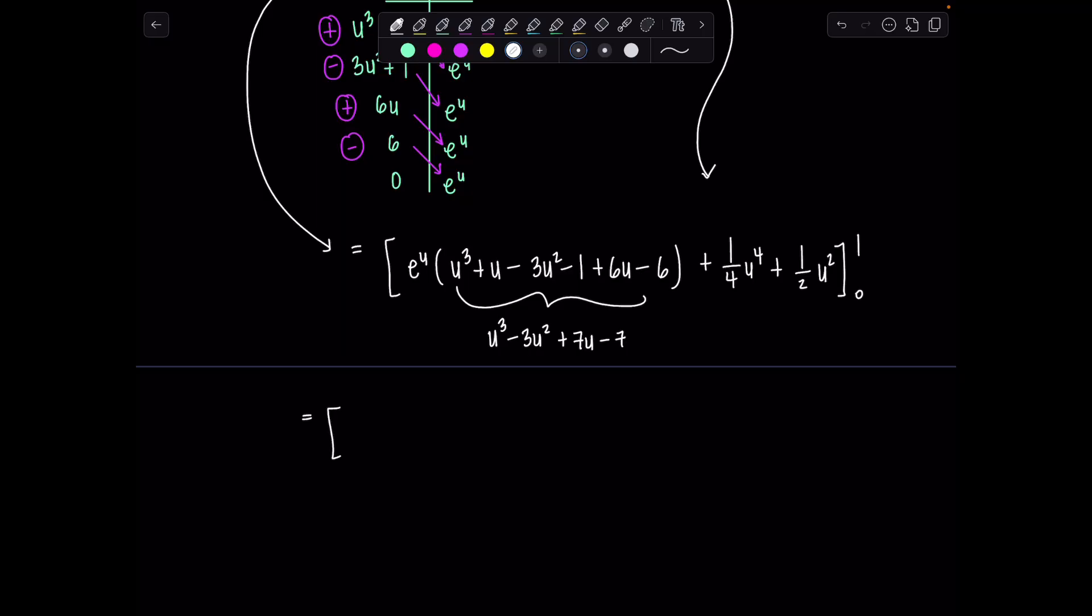So now we've got e^u times (u³ - 3u² + 7u - 7) plus one fourth u⁴ plus one half u² evaluated from zero to one. So here we go.